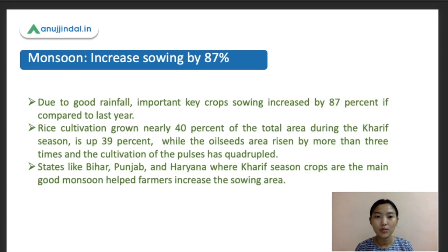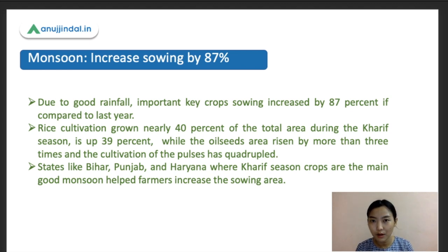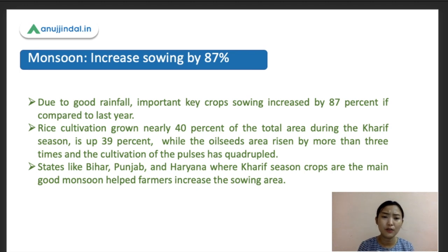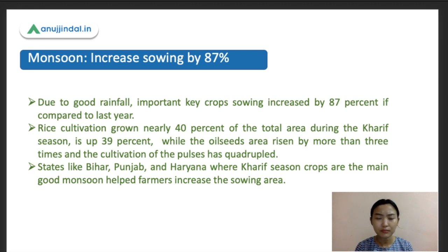Due to good rainfall in June, sowing of key crops increased by about 87% compared to last year. Rice, being the major kharif crop, is grown over nearly 40% of the total kharif crop area, which is up about 39%. Oilseeds have risen more than three times their normal production, and pulses have quadrupled — meaning four times the normal cultivation.